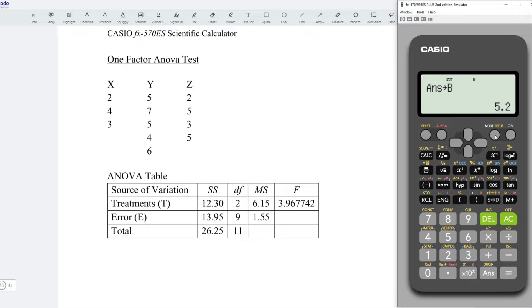The last treatment, again mode, statistic, one variable. Enter the values. We have 2, 5, 3, 5. AC.